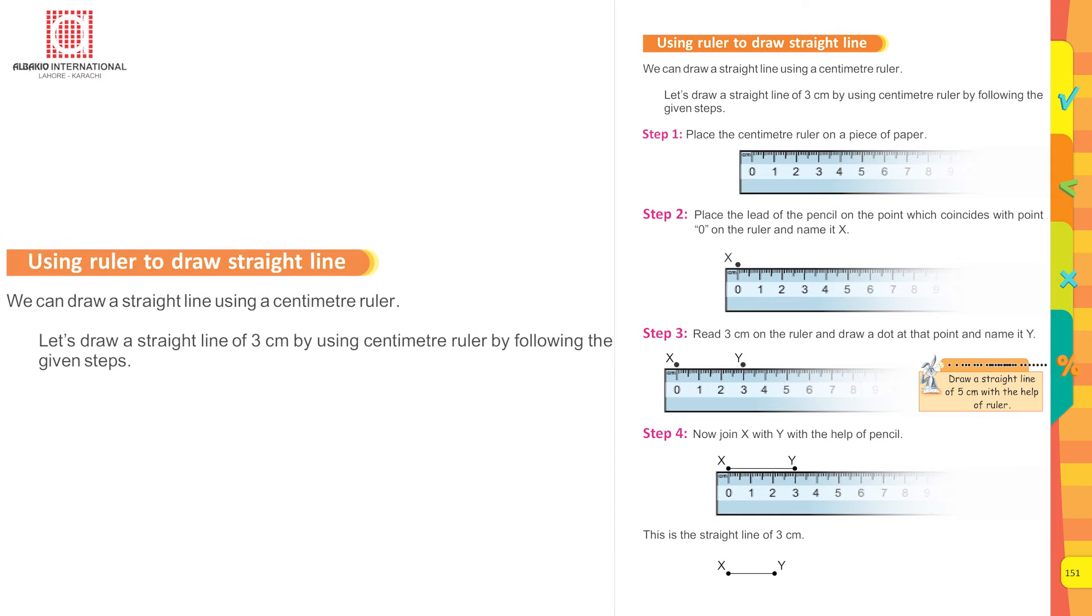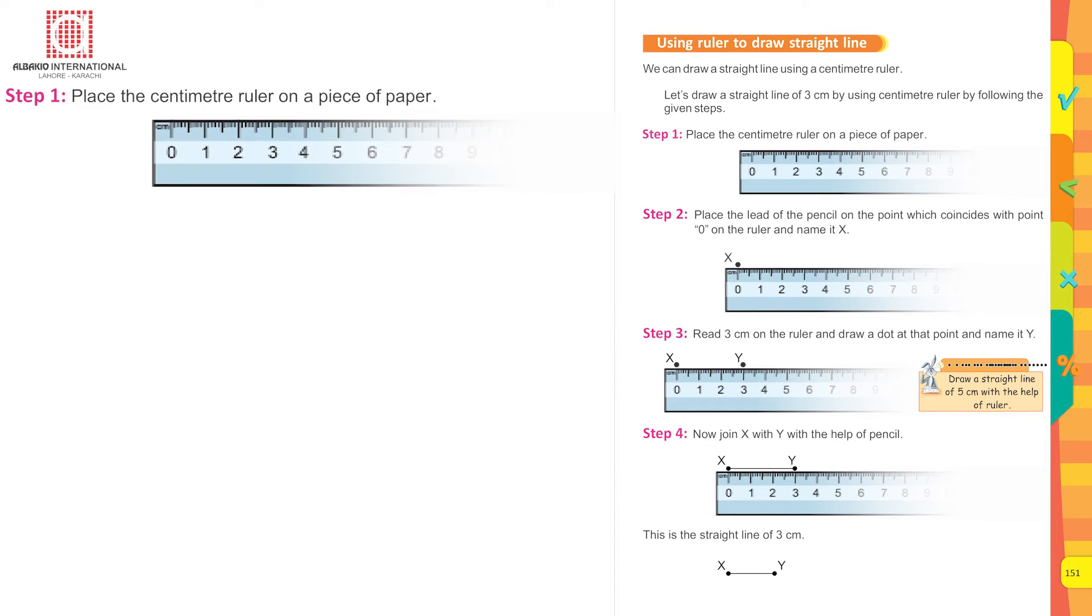Using ruler to draw a straight line. We can draw a straight line using a centimeter ruler. Let's draw a straight line of 3 centimeters using a centimeter ruler by following the given steps. Step number one: Place the centimeter ruler on a piece of paper.